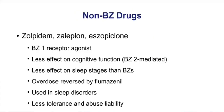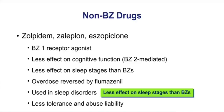We have some non-benzodiazepine drugs to consider as well. This includes zolpidem, zaleplon, and eszopiclone. These are BZ1 receptor agonists — specific for BZ1 with less effect on BZ2 receptors. That means these drugs are going to have less effect on cognitive function. Being BZ1 selective, they are useful in sleep disorders, since the BZ1 receptor is the sleep receptor. As a group, these non-benzodiazepine drugs that work through BZ1 have less effect on sleep stages compared to the benzos.